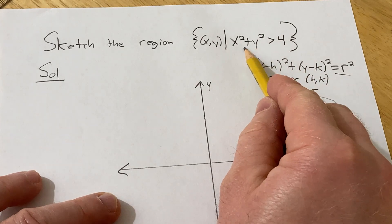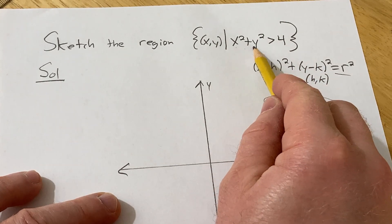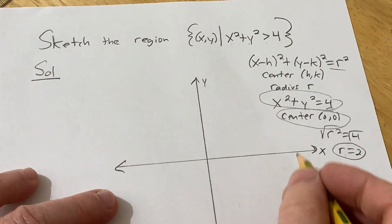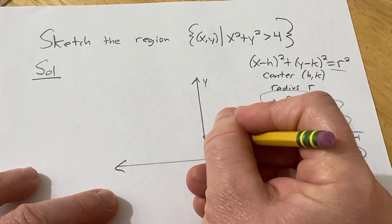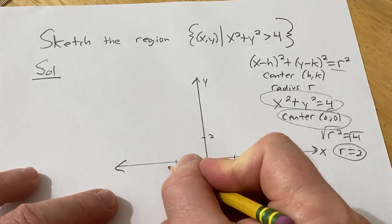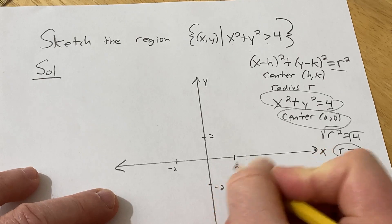And we want all of the points such that x² + y² is bigger than 4. So watch this. So here's 2, 2, negative 2, negative 2.